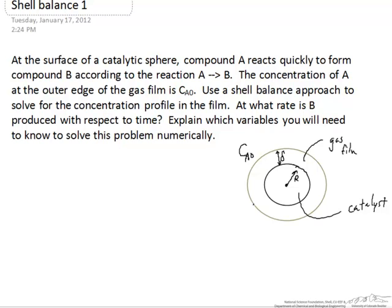And so the reaction rate to produce our product B is completely controlled by the diffusion process. And this is a phenomenon that you might observe, for example, at high temperature where mass transfer is often the limiting factor in controlling the reaction rate.